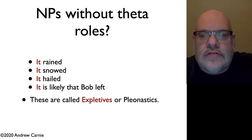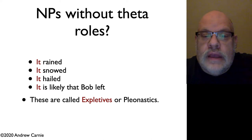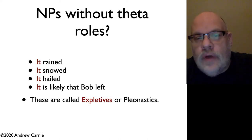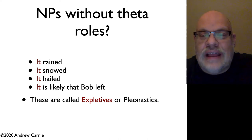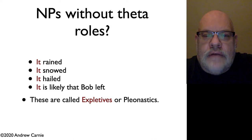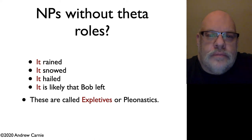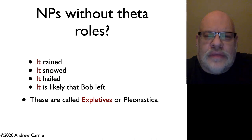Expletives come in two major forms. One major form is the DP that comes along with weather verbs — verbs like "it rained," "it snowed," "it hailed." They also show up with certain kinds of predicates like "is likely," so "it is likely that Bob left" — the "it" there is an expletive. If you think for a moment about what is the meaning of "it," it in the weather verbs might mean something like "the weather," but it might just as well be nothing.